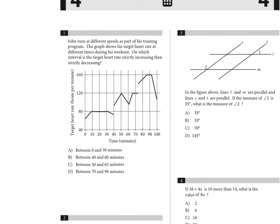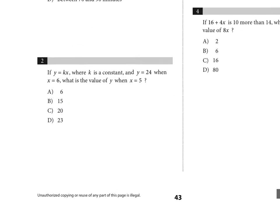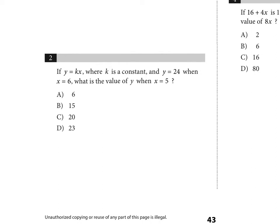Question one: John runs at different speeds as part of his training program. The graph shows his target heart rate at different times — x-axis is time, y-axis is target heart rate. It asks on which interval is the target heart rate strictly increasing then strictly decreasing. Looking at zero to 30: from zero to 10 it's increasing then constant, so that's not it. Looking at 40 to 60: it goes increasing then decreasing. I'm pretty confident the answer is B.